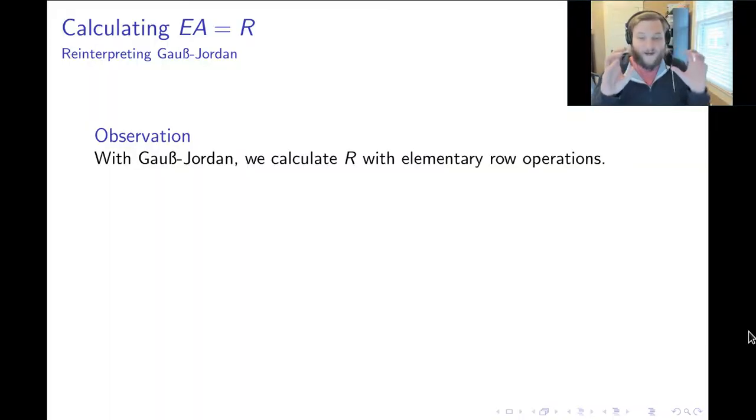So, we've said what EA equals R means. EA equals R means E is non-singular, A is any matrix, and R is the reduced row echelon form of A. And then we paused for a moment and said what this idea of an elementary matrix is. An elementary matrix is obtained from one row operation on an identity matrix.